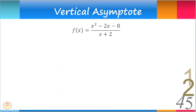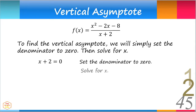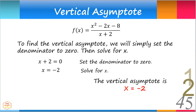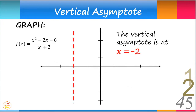Let's consider another rational function. To find its vertical asymptote, we set the denominator to 0 and solve for x. That would be x plus 2 equals 0, so x equals negative 2. Thus, the vertical asymptote is x equals negative 2. The curve runs closer and closer to the vertical line x equals negative 2 but will never intersect nor touch it.